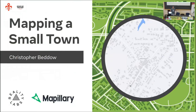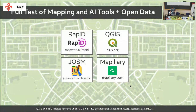Is anyone here from a small town, a rural area, or a big city? Small town mapping can translate really well to big city mapping, and we'll get into why at the end. This is a full test of mapping and AI tools plus open data, using Rapid for editing, QGIS for data analysis, JOSM for advanced editing, and Mapillary for image collection.